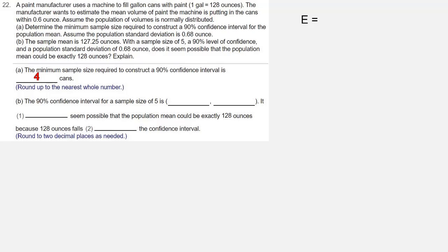Error equals Zc times sigma of x bar, which is Zc times sigma over the square root of n. The Zc value is 1.645, the sigma is 0.68, and n is 5.